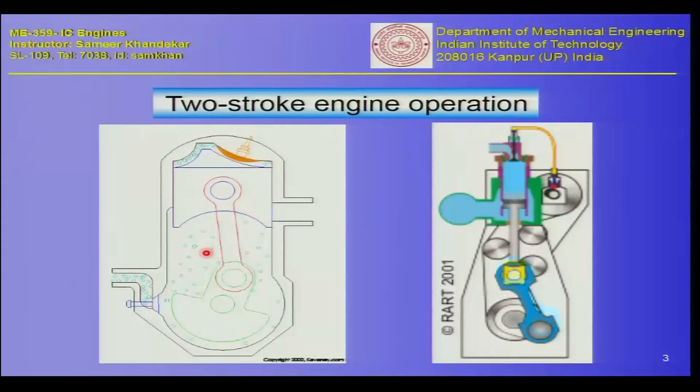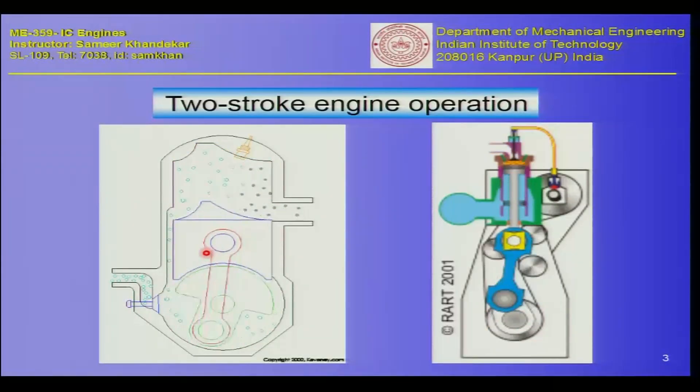As you will recall, the four processes are: suction, compression, work done, and exhaust. Work done is also called expansion, where the gas expands and pushes the piston down — it is also called the expansion stroke. These four processes were taking place in two strokes of the engine, and today we will see how these processes can also be done in four strokes.